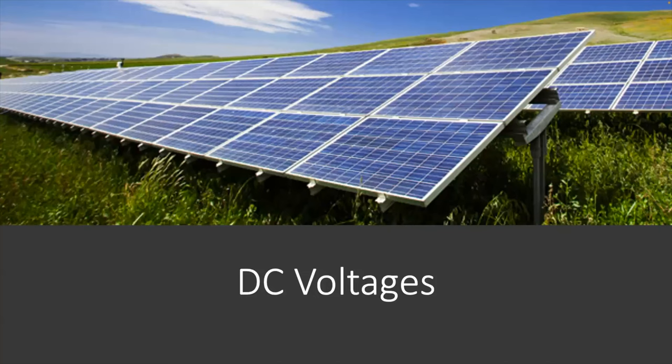Now let's look at DC voltage. I've got a picture of solar panels because solar panels are one of the few power producers that produce DC voltage. If you see solar panels on your house, what is happening is that the solar panel is producing DC voltage and then we invert that to AC to connect to our house. It could be a grid-connected system where you're still connected to the power company, a separate system where you have a separate meter and you're selling your power back to the electric company, or an off-grid system where you have battery backups. These solar panels produce DC voltages.